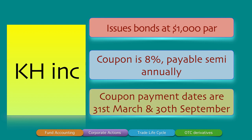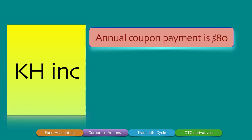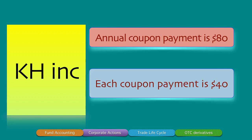Translating these data points: the annual coupon payment is $80, and each semi-annual coupon payment is $40. Here I've simply divided by two, but if you're working in European, Asian, or Latin American markets, please be aware that the coupon payment may differ due to the day count conventions followed in those markets.